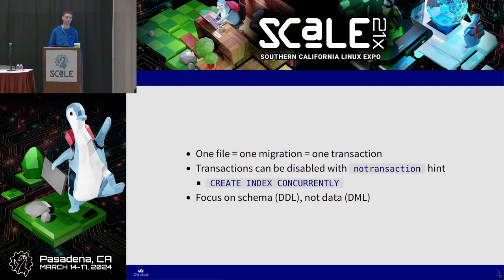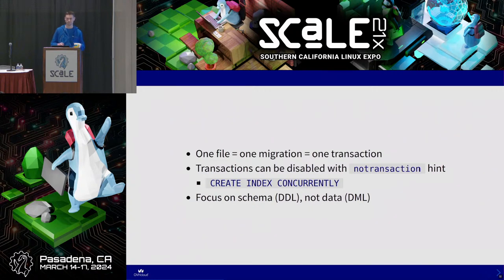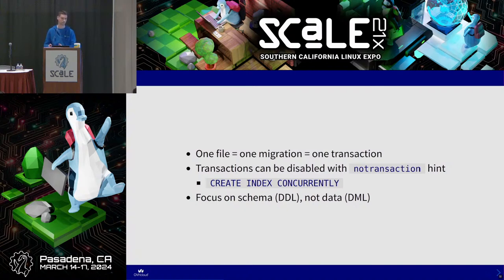Sometimes we need to disable transactions because of technical reasons. For example, Postgres doesn't allow CREATE INDEX CONCURRENTLY inside a transaction, so we can disable it by using a hint. And the contract with our developers is: we focus on DDLs and DDLs only, not DML. What's inside the databases in terms of data is managed by the application. If you lose data by running DDLs, we can restore from backups.